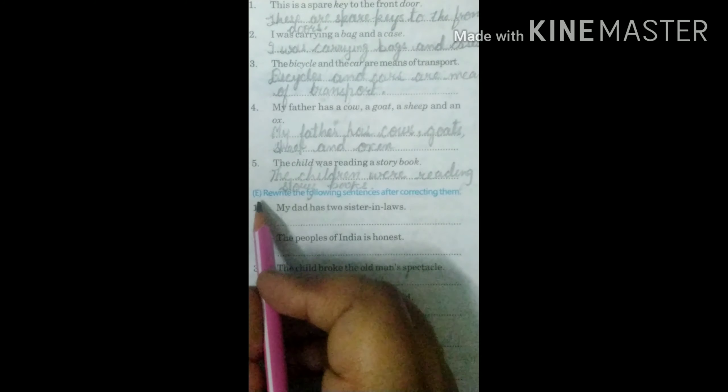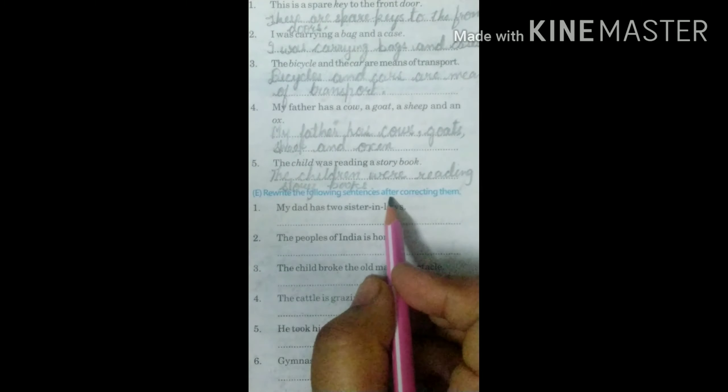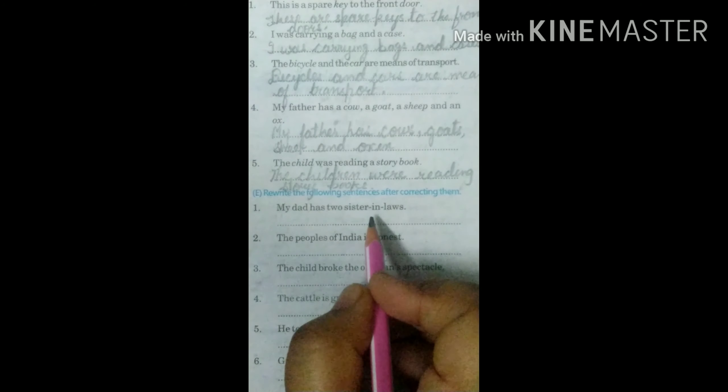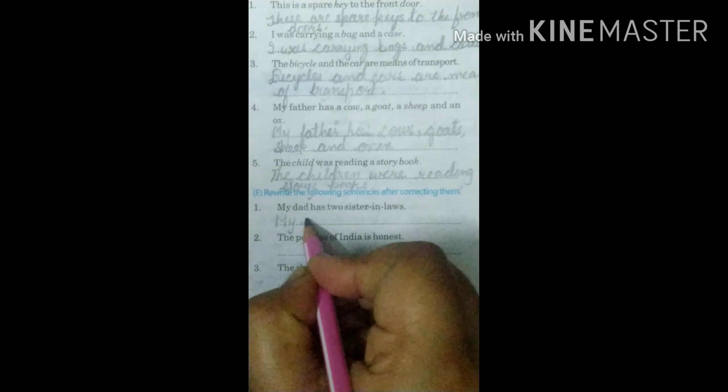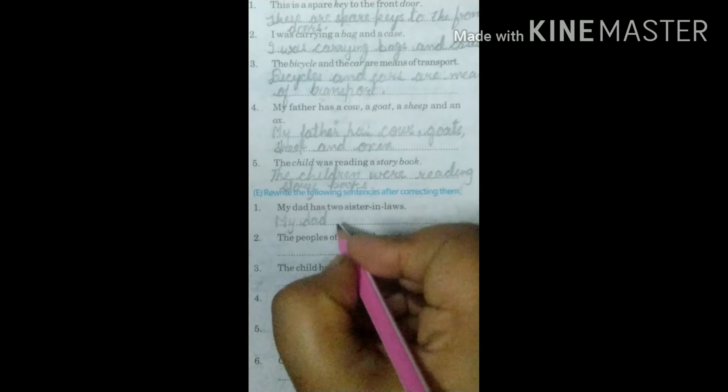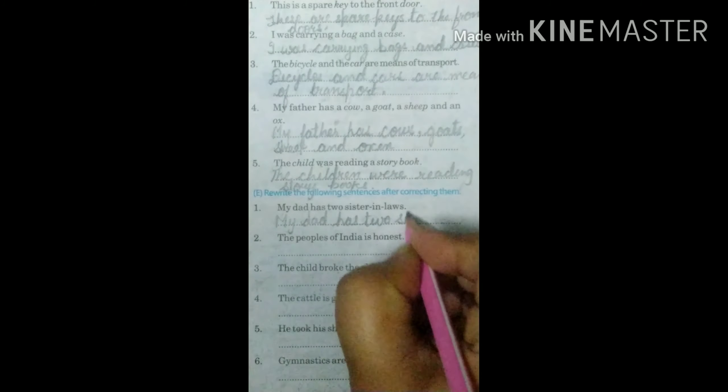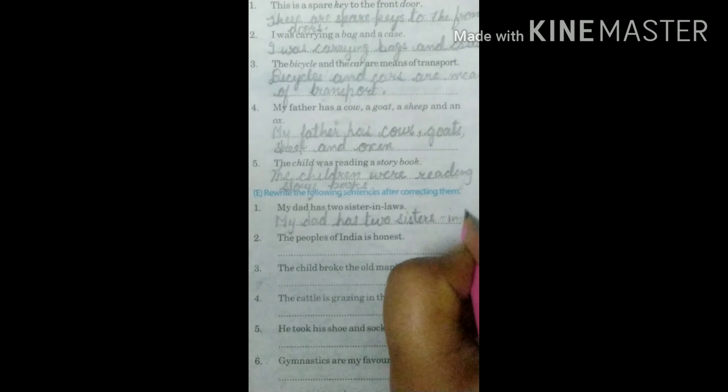The last exercise is E, rewrite the following sentences after correcting them. My dad has two sister-in-laws, it is incorrect. It will be my dad has two sisters-in-law.